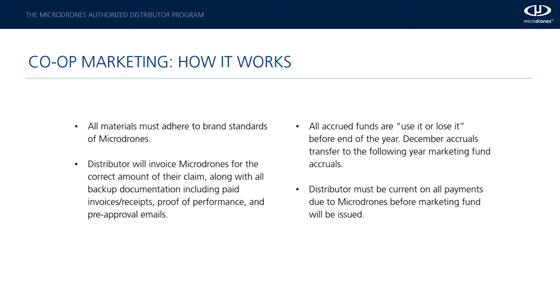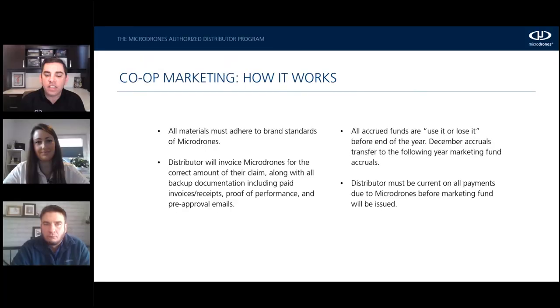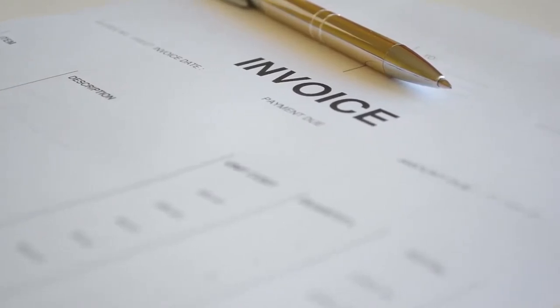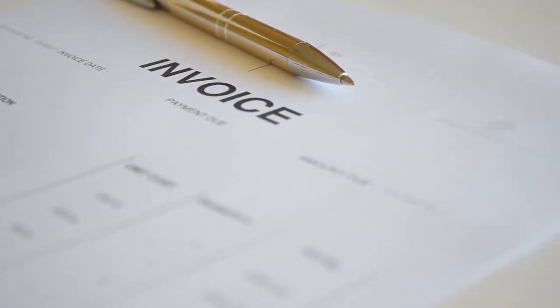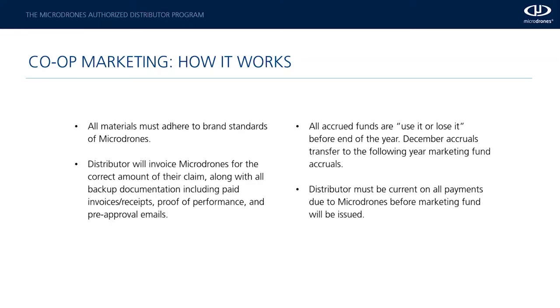Let's say I've had my campaign approved, I've run it, and I've received the invoice. What's the next step? You are going to invoice Microdrones for the correct amount of the claim. In the example we did, she's going to invoice Microdrones for $500, and include in that email all of the backup documentation, including paid invoices or receipts, proof of performance, and pre-approval emails. The main thing is to just work with our marketing directors - Brett, Miriam, Susan, and Irene - and they're going to be your tour guide and keep it simple.